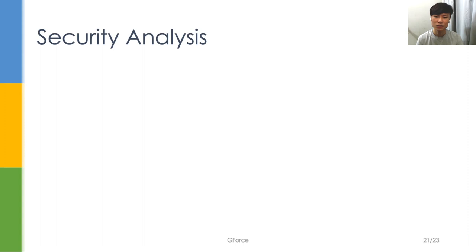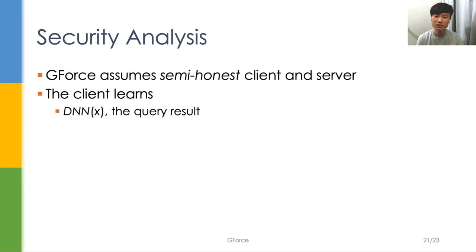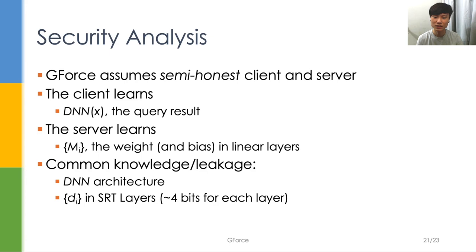Now, let's talk about our security analysis. We assume the client and the server to be semi-honest, which means they will stick to GeForce protocols, although they may want to know the protected secrets. The client learns the query results, while the server learns the weights and bias in the linear layers. Both of them will know the neural network's architecture and the divisor in SRT layers.